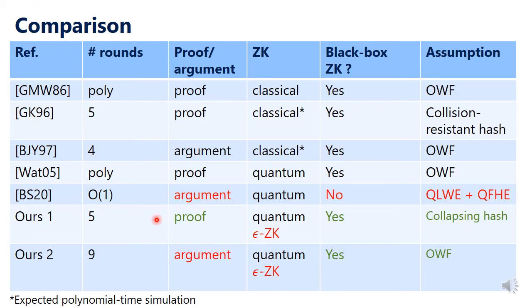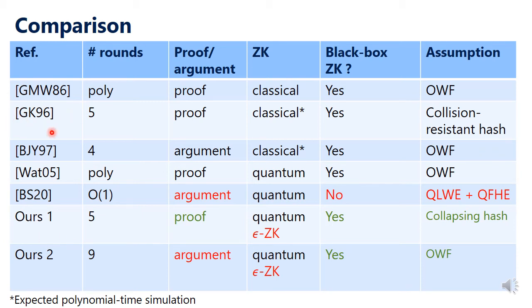This is the comparison table among known constructions and ours. The collapsing hash function is the quantum counterpart of collision-resistant hash functions, so our first construction is very similar to what is achieved by the Goldreich-Kahan protocol. Our first construction is almost the same as the Goldreich-Kahan construction, except that we use post-quantum building blocks.